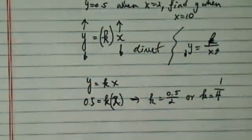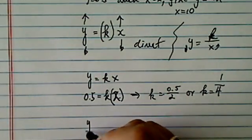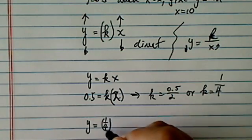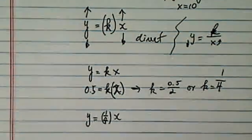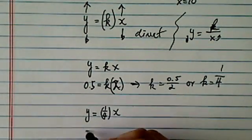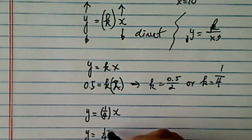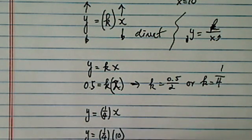Okay. Now, having solved what k is, we have y equals 1 over 4 times x. And then they are asking when x equals 10, what happens to y? Well, we're going to plug it in. We say that y equals 10 over 4, or y equals 2.5.